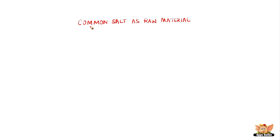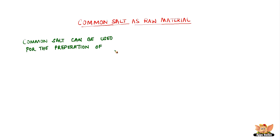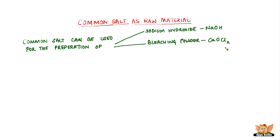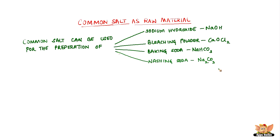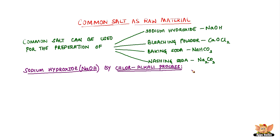Common salt as raw material. In this video, let's see how to prepare different compounds from common salt. Sodium chloride can be used as a raw material for the preparation of various materials of daily use, such as sodium hydroxide, bleaching powder, baking soda, washing soda, and many more.